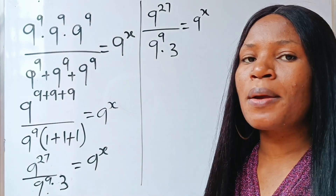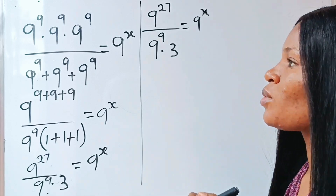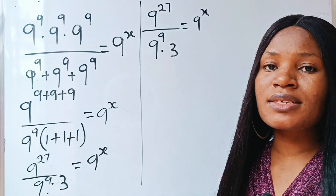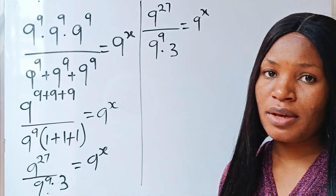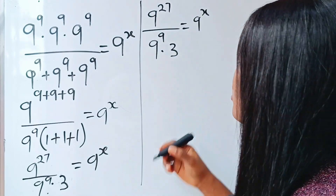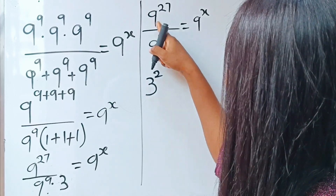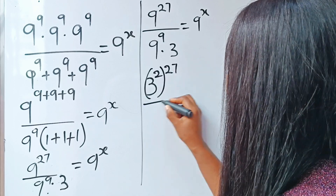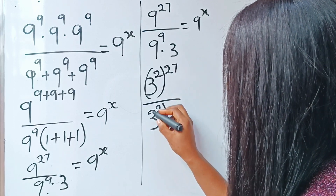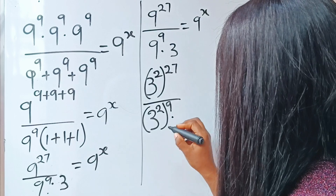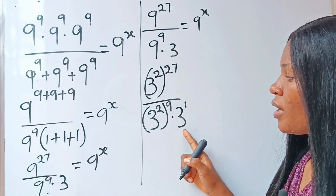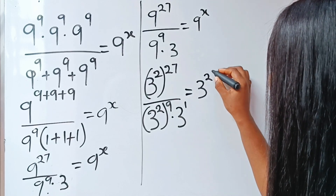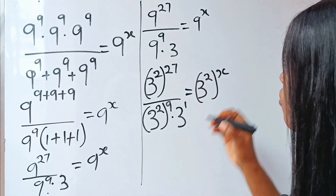Now let's put everything in the same base, because once you are solving any question on exponents or indices, please try to put them in the same base. So we are going to have 3 to the power of 2 — that is, 9 expressed as 3 squared — raised to the power of 27, divided by 3 to the power of 2 raised to the power of 9, multiplied by 3 to the power of 1. This is equal to 3 to the power of 2 raised to the power of x.